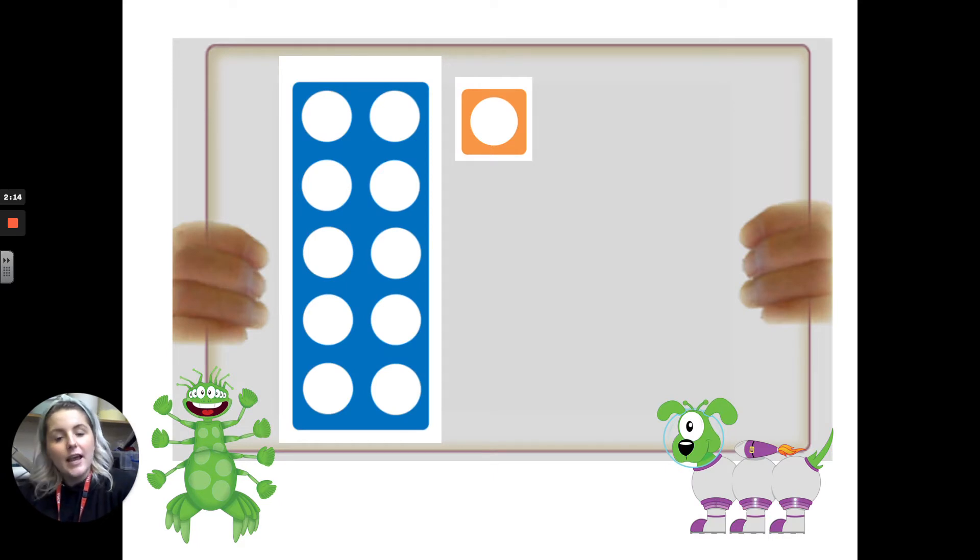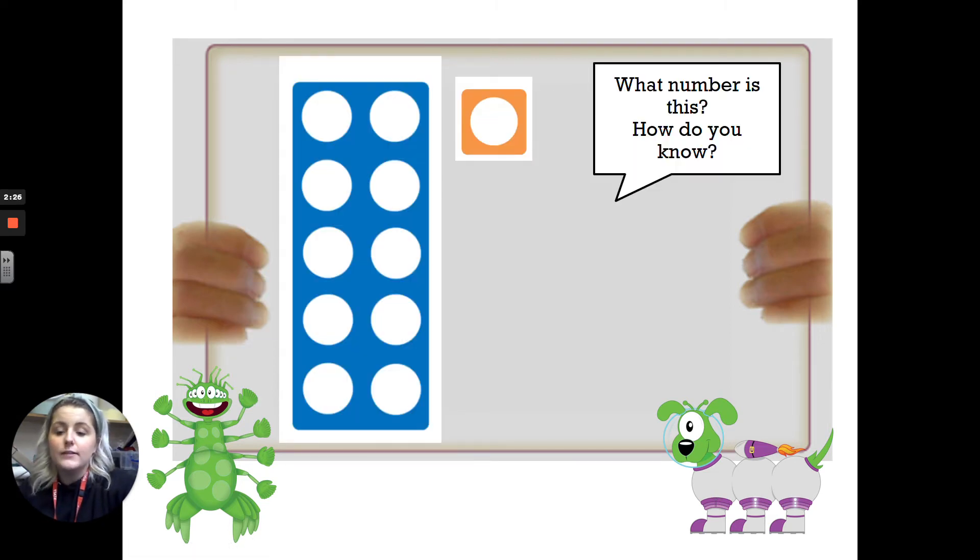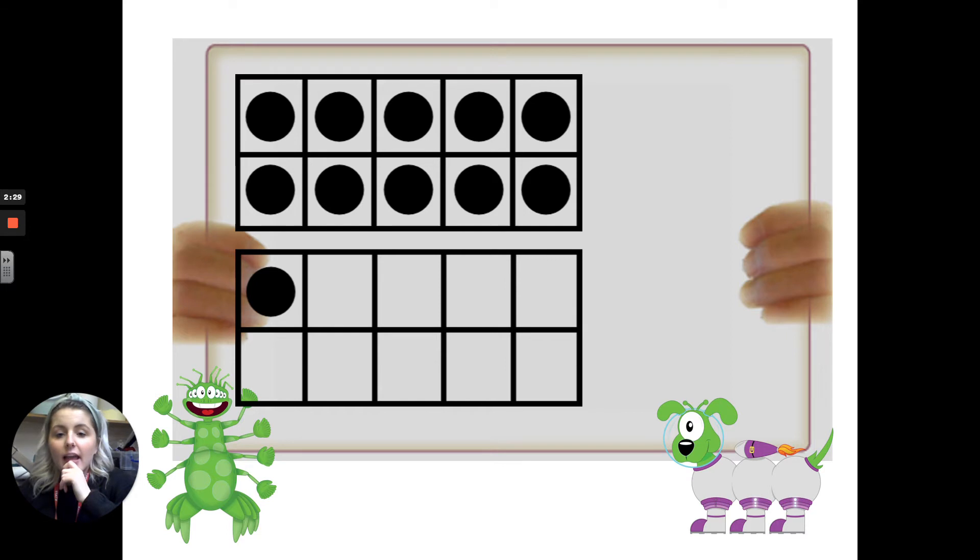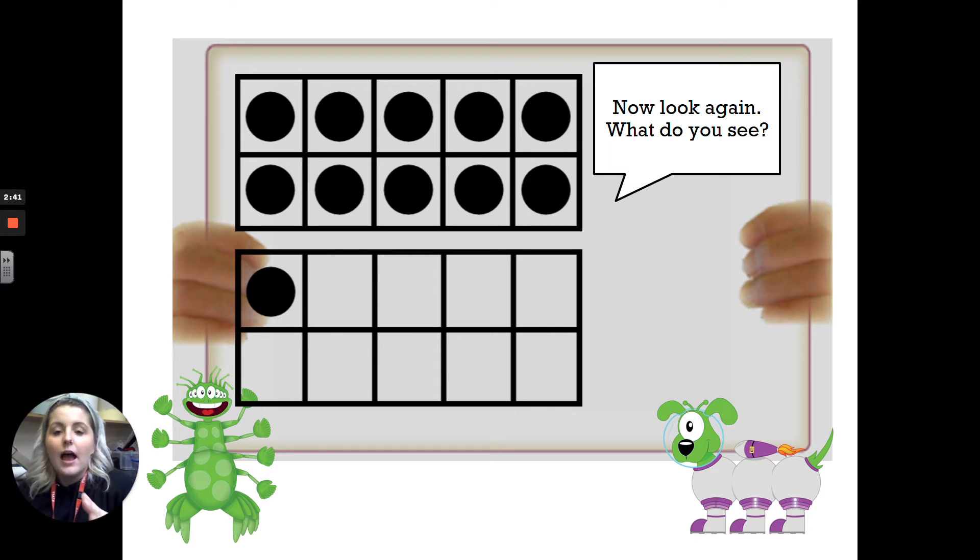Ten and one. Count to check. One, two, three, four, five, six, seven, eight, nine, ten, eleven. Eleven. We just counted to double check, didn't we? And here's another way of looking at eleven, because we've got a ten frame here. And how many circles have we got in the ten frame? Absolutely, we've got ten circles in the ten frame. But hang on, we've got one more circle in the new ten frame. And how many is there? One. And we know now that ten and one equals eleven. Well done.